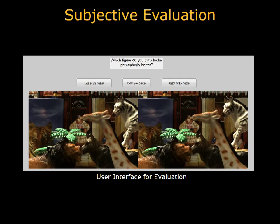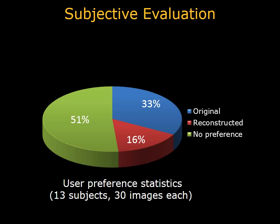Here we show results for another reconstructed epsilon photography stack. Finally, we conducted a subjective evaluation to test the performance of our algorithm. Test subjects were presented with two images and were asked which image, if either, was perceptually better. In over two-thirds of the cases, respondents either couldn't tell the difference between ground truth and reconstruction or actually preferred the reconstructed images.